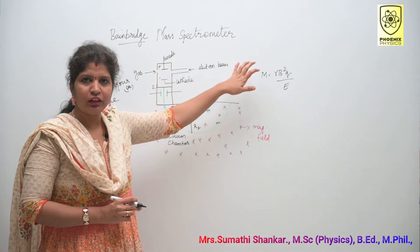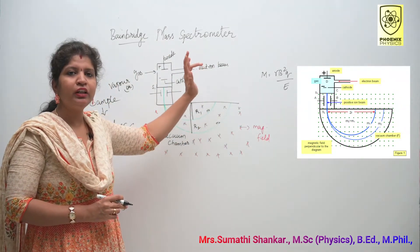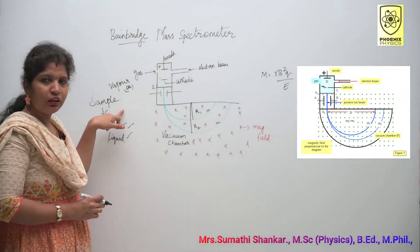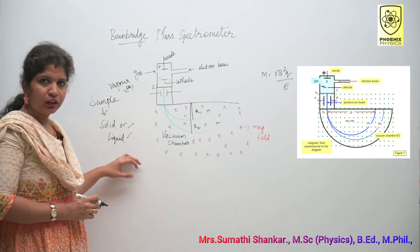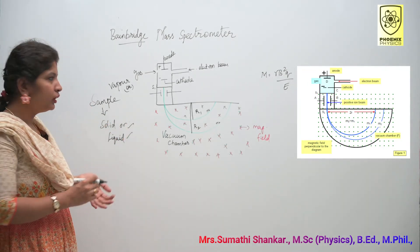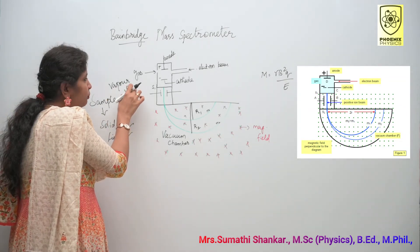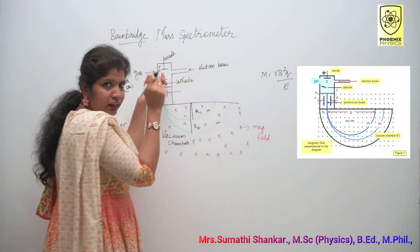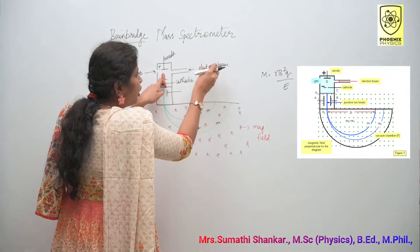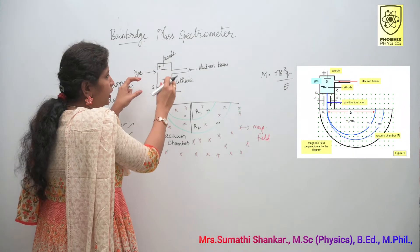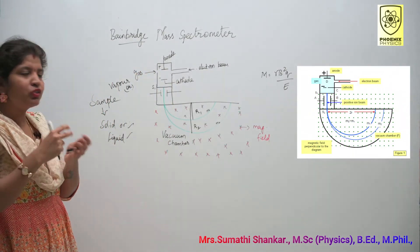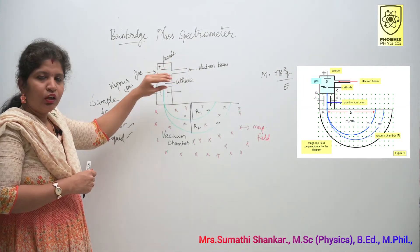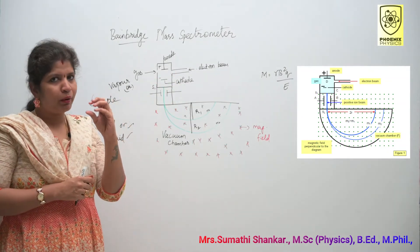This is the Bainbridge mass spectrometer. Using this mass spectrometer, we can measure the mass of an ionized particle. The sample is in the form of solid or liquid. We heat the sample, after which it becomes vapor or gaseous state. We allow this gas to enter into the chamber. Here, I have an electron gun. This electron gun bombards the gas molecules. Due to this bombardment, electrons are knocked off from the atoms and the atoms become ionized. Due to this bombardment, some of the particles become charged.